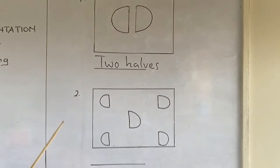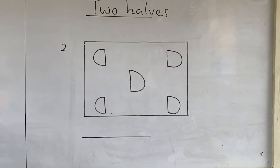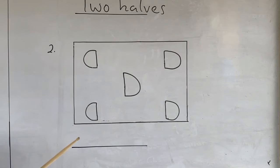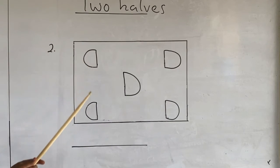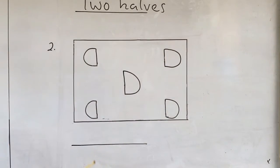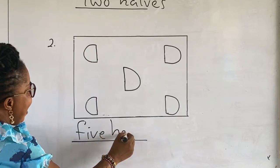Now, let's look at the next example. Example two. We are going to look at the number of halves that we have in this group. Let's count them together. One, two, three, four, five. So, it is written as five halves.